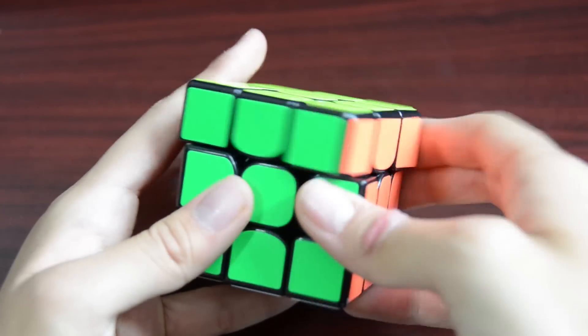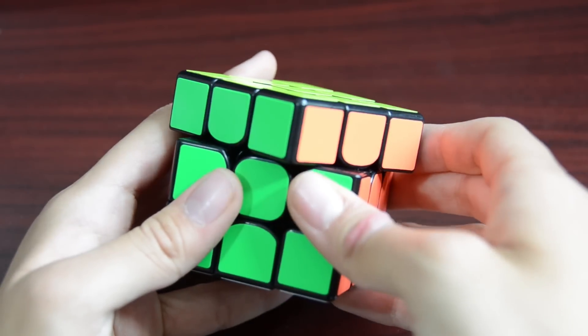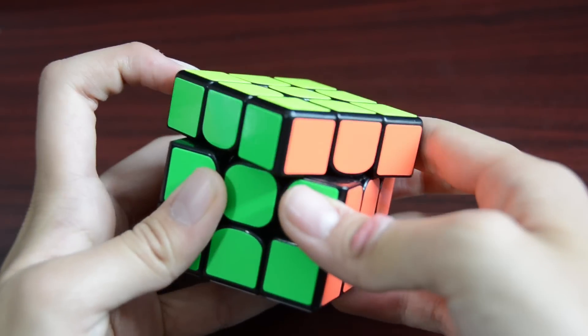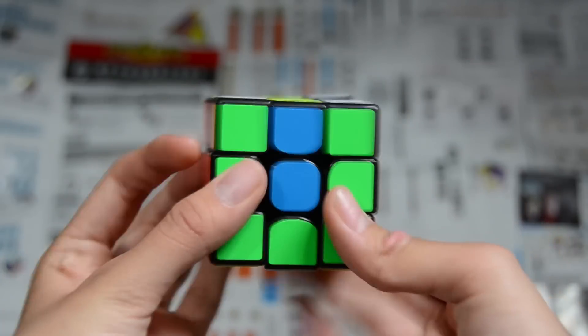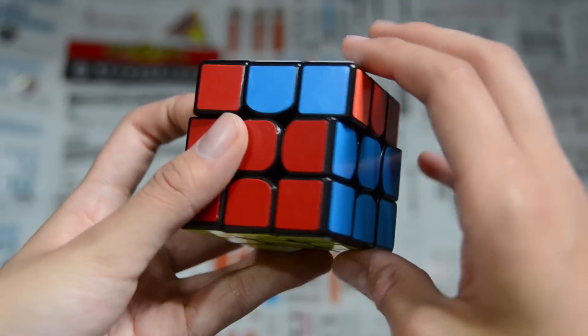The two categories that set it apart from the rest, as with every other 3x3 today, is turning and mechanism. The turning of the Weilong GTS is similar to the Golan Yuesiao, with hints of the Hualong, and it actually feels nothing like its namesake.